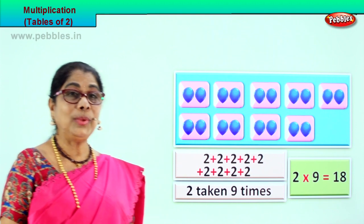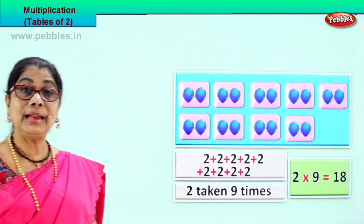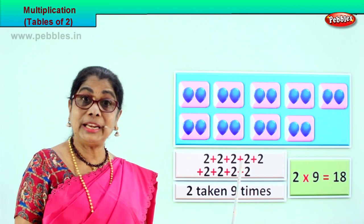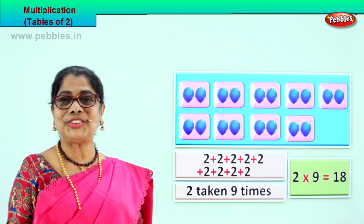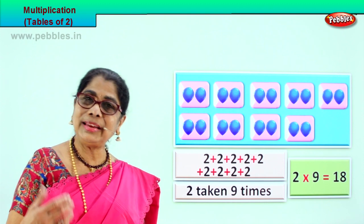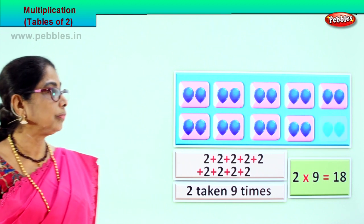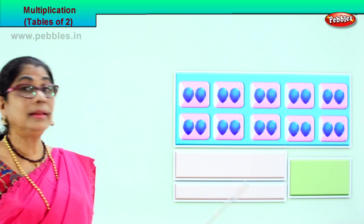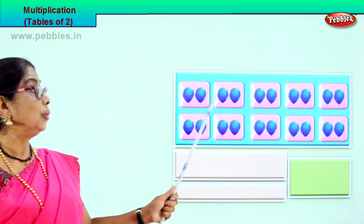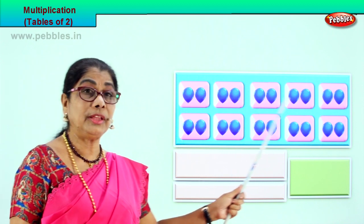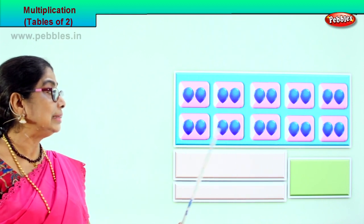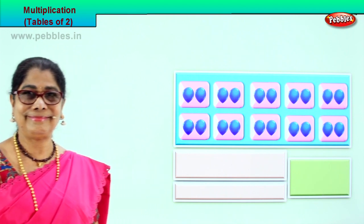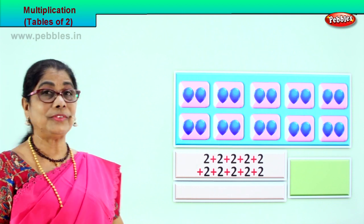Yes. Good. We are learning multiplication in picture representation. Addition is? Multiplication is? Repeated addition. Good. Shall we take another grouping of two? Look, let's look at this now. How many times is two taken? Let's see — two taken how many times? One, two, three, four, five, six, seven, eight, nine, ten. Two taken ten times. Groups of ten — two groups of ten.